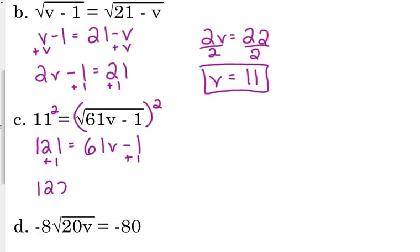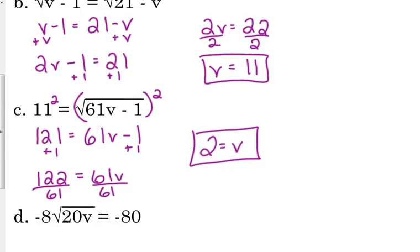So, add 1. We get 122 is equal to 61v. Divide by 61. 2 is equal to v. Check it. 61 times 2 is 122. Minus 1 is 121. Square root of 121 is 11.